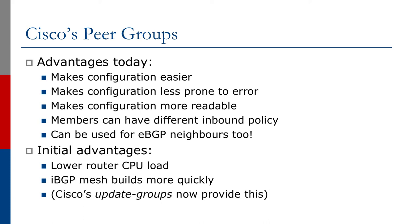Because it only applies to outbound policy, members of the Peer Group can have different inbound policy. And not only can we use Peer Groups for internal BGP, we can use it for external BGP as well. When Cisco first introduced Peer Groups into IOS it also lowered the router CPU load and helped the IBGP mesh build much more quickly.